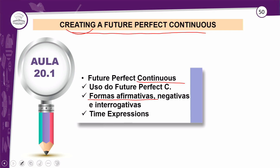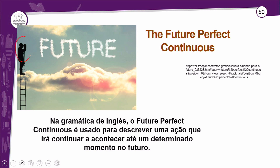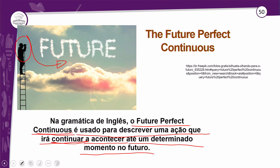O uso do futuro perfeito contínuo, as formas afirmativas, negativas, interrogativas, e as time phrases ou time expressions, que são as expressões de tempo. Ainda brincando com o futuro, você vai fazer essa projeção lá no futuro de ações que estarão em andamento — porque a gente está falando de progressão, de coisas em andamento. O futuro perfeito contínuo é usado para descrever uma ação que irá continuar a acontecer até um determinado momento no futuro, indicando a continuação de ações que serão terminadas em um tempo específico lá no futuro.